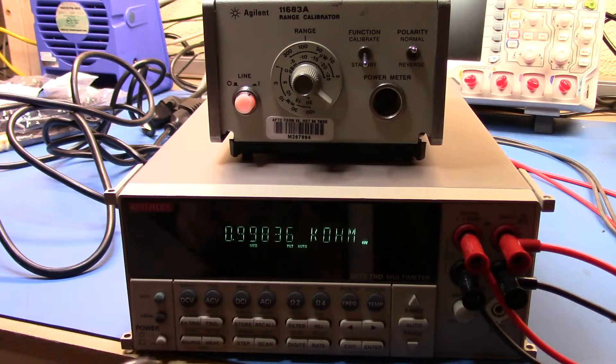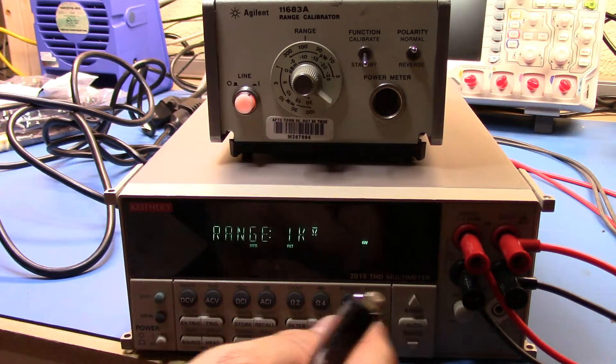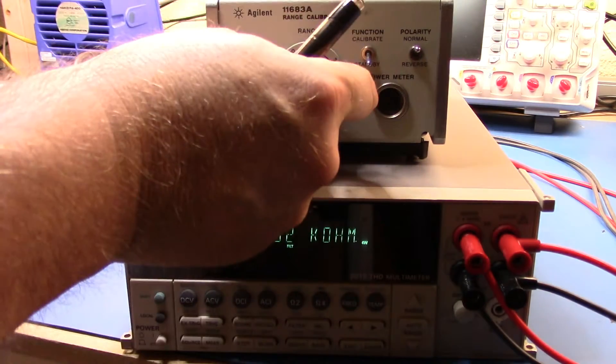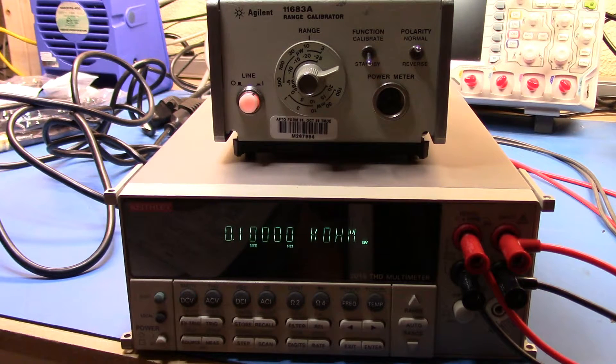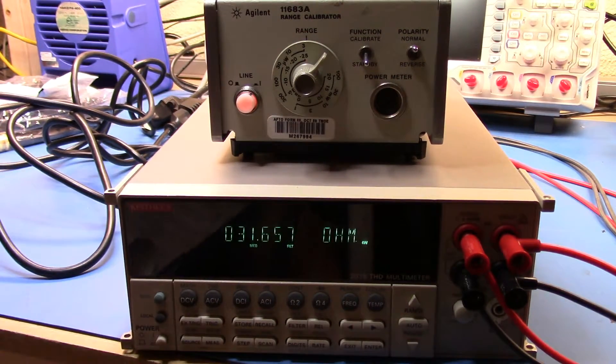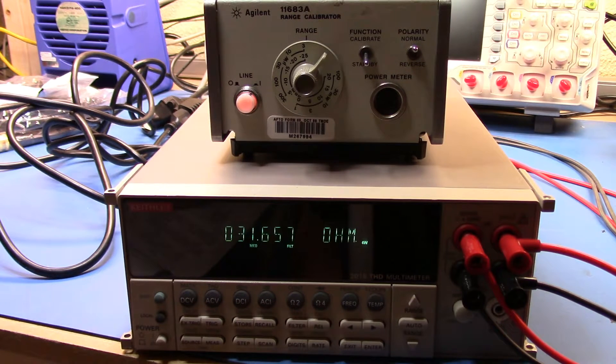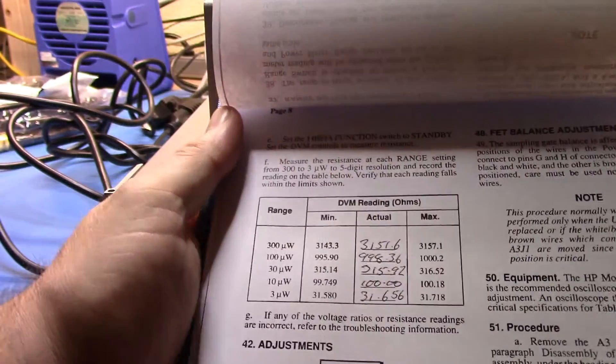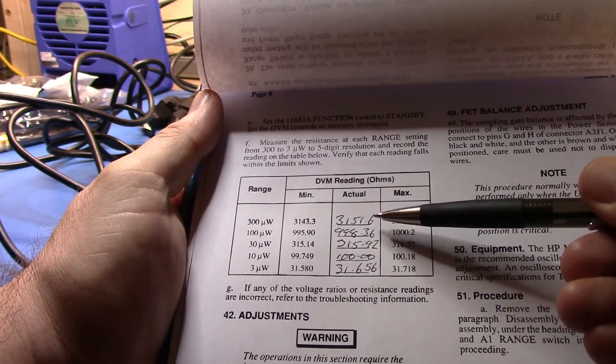998.36 ohms. What's my next one? It's 100 is my next one down. All right so then I get 315.92 ohms. Yep, 100 exactly. Now let's go down another range. I'm getting 31.656.